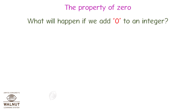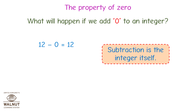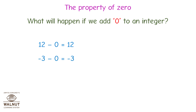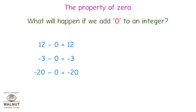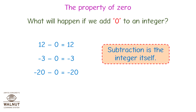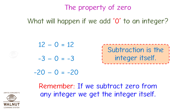The property of zero. Let's check the additive identity of subtraction. What will happen if we subtract 0 from any integer? Let's see. 12 minus 0 is equal to 12 — the result is the integer itself. Minus 3 minus 0 is equal to minus 3. Minus 20 minus 0 is equal to minus 20. That means, if we subtract 0 from any integer, we get the integer itself.